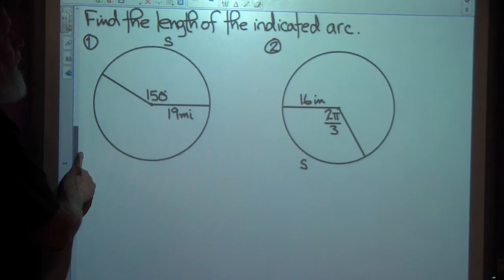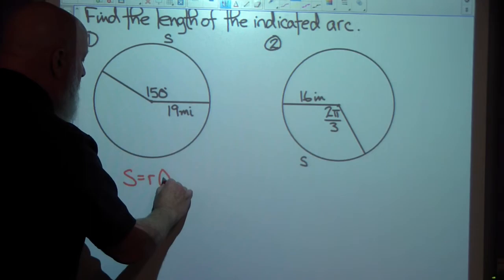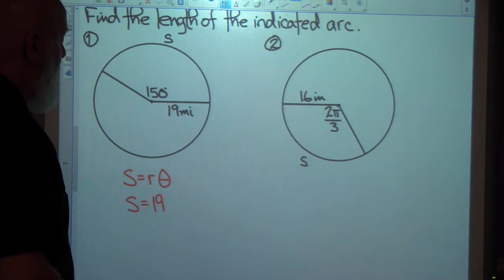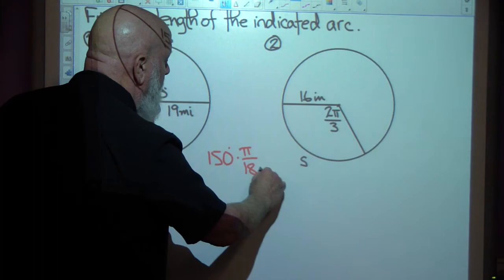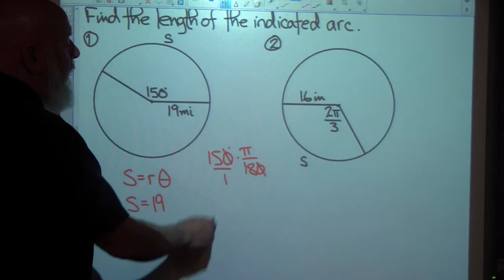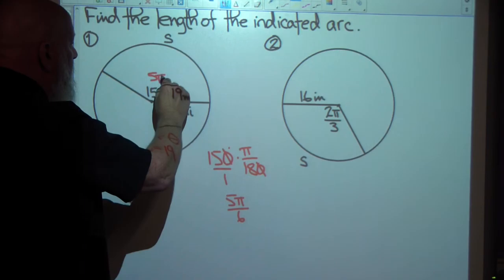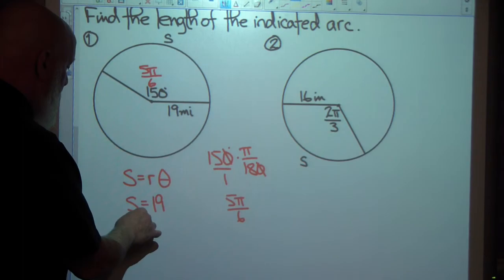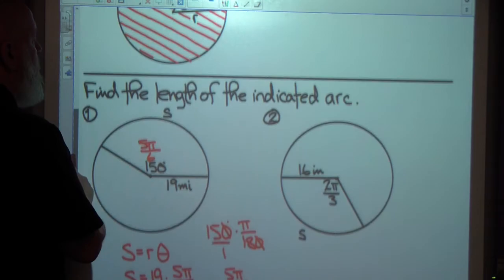Find the length of the indicated arc. Well, I've got S equals R theta that I'm working with. S equals R is 19 miles. Theta is not given to me in radians. And for the arc length formula, theta must be in radians. So I'm going to convert 150 degrees to radians real quick. These will cancel. 15 over 8, they'll both divide by 3. So that'll be 5 pi over 6. So it'll be R is 19 times 5 pi over 6.